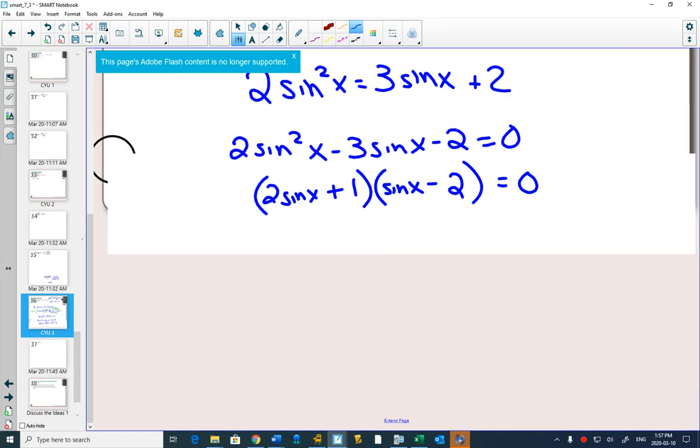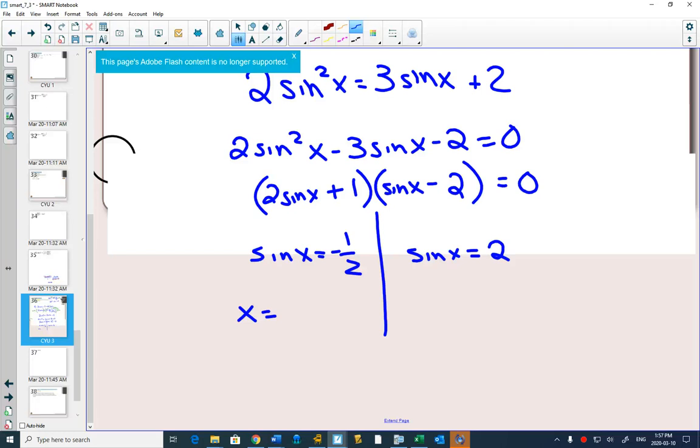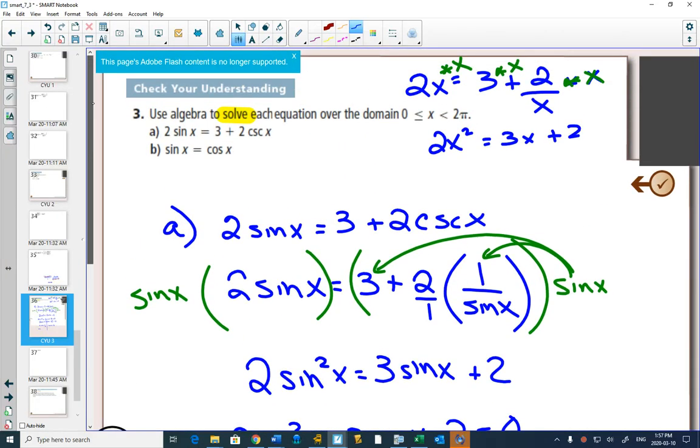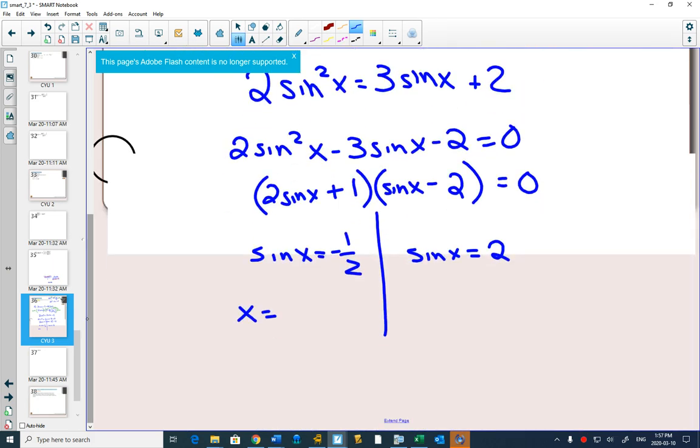So now we can split it here. And either sine x is equal to negative a half or sine x is equal to two. What family do you get a half or sine? 30. 30 degrees or pi over six. Are we working in degrees or radians in this question? Radians. So we have to go pi over six family. It's negative in quadrants three and quadrants four. When is sine x equal to two? Never. You do need to indicate that that is not possible.